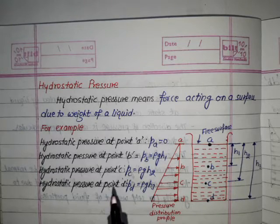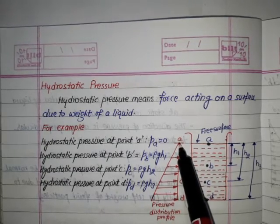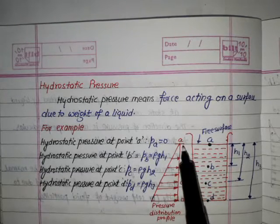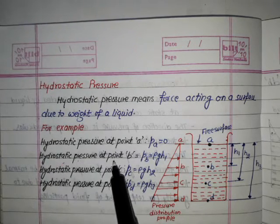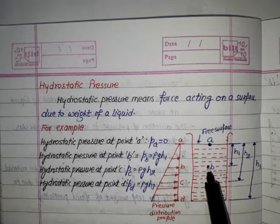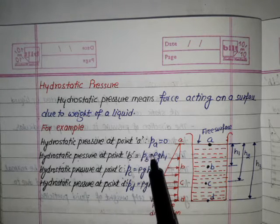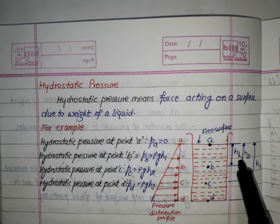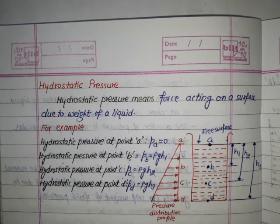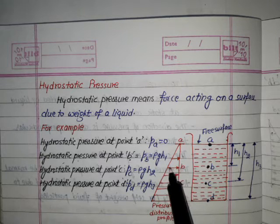Hydrostatic pressure at point B is denoted by Pb = ρgh. Here h is h1, so it becomes ρgh1. This is the pressure at this point.